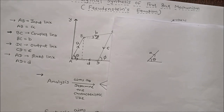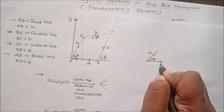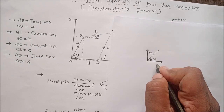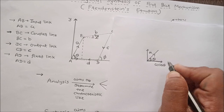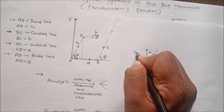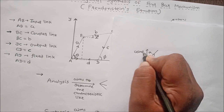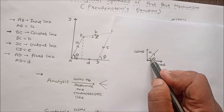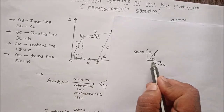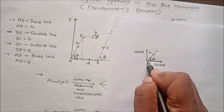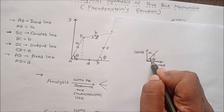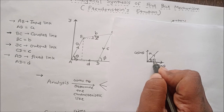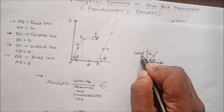There are two components: one horizontal and one vertical. The angle-adjacent side gives the horizontal component A cos theta, and the angle-opposite side gives the vertical component A sin theta.